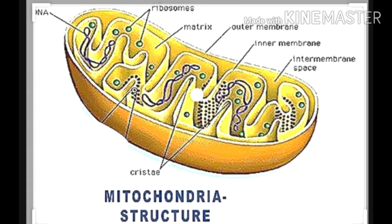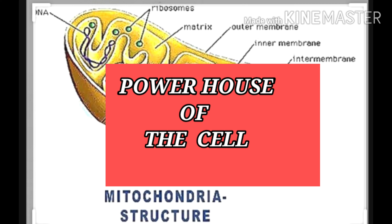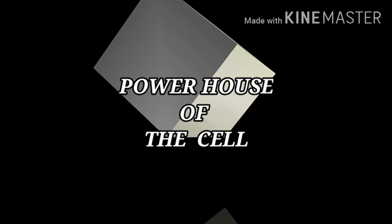Mitochondria is the site of cellular respiration, and this process releases energy in the form of ATP, which is utilized by the organisms for their various processes. That is why mitochondria is called the powerhouse of the cell, and ATP is called the energy currency of the cell.